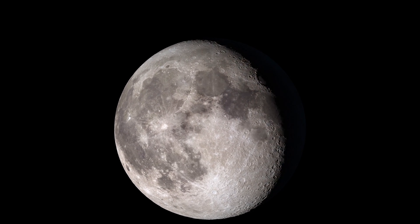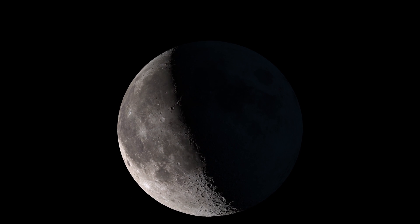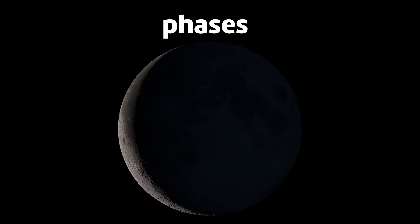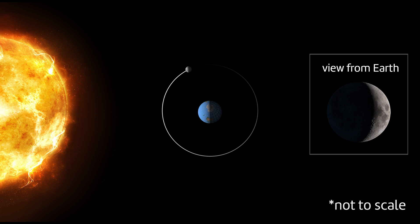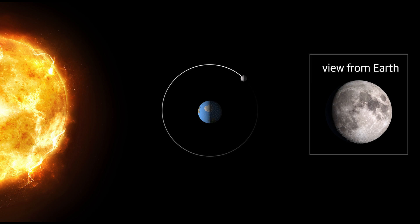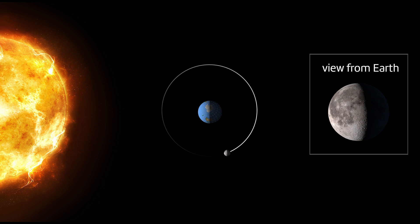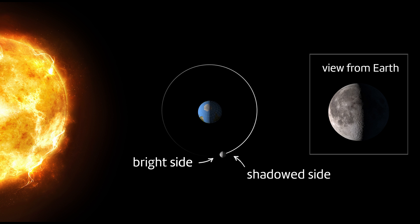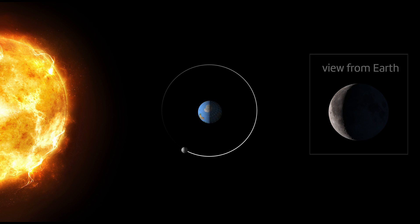When you look up at the Moon night after night, it appears to slowly change shape. These changes, known as phases, are repeated every month. This is because they depend on where the Moon is in orbit around the Earth, a journey that takes 29 and a half days. Notice that half of the Moon is always lit up by the Sun, and that half is always in shadow. From Earth, we see different amounts of the bright side at different times of the month. This is what causes the phases of the Moon.